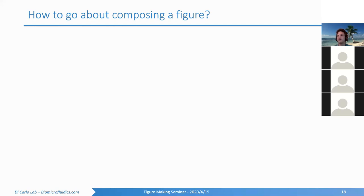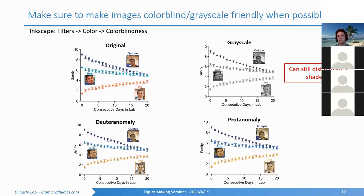Before getting into that, one related point: in Illustrator, under the View menu, there's an option to show you what someone with a particular kind of color blindness will see your figure as — it'll actually change the preview. Similarly, in Inkscape you can go to Filters > Color > Color Blindness to preview different types of color blindness. I'm sure PowerPoint has similar options, or you can at least do grayscale easily.